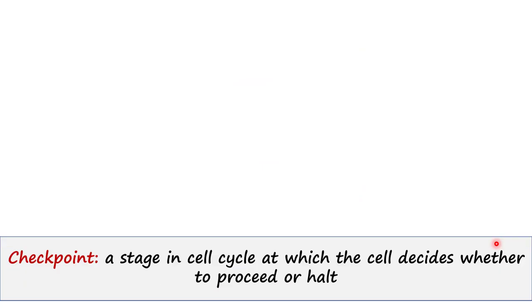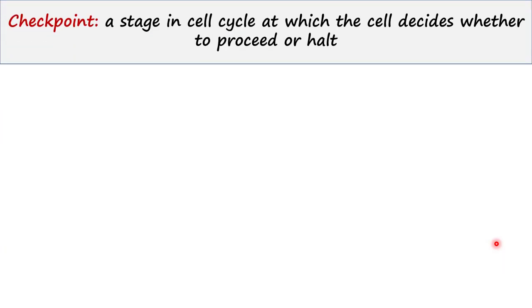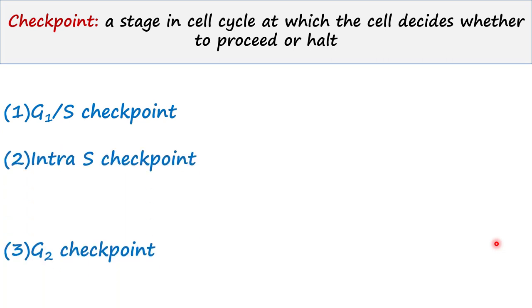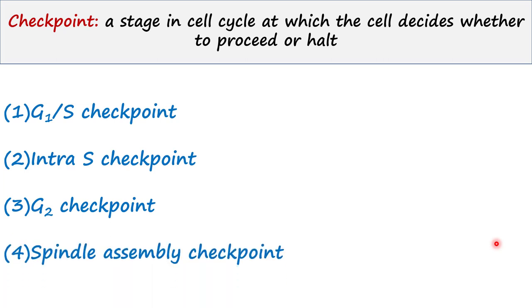A checkpoint is a stage in cell cycle at which the cell decides whether to proceed or halt. There are four checkpoints in a cell cycle: G1/S checkpoint, intra-S checkpoint, G2 checkpoint, and spindle assembly checkpoint.